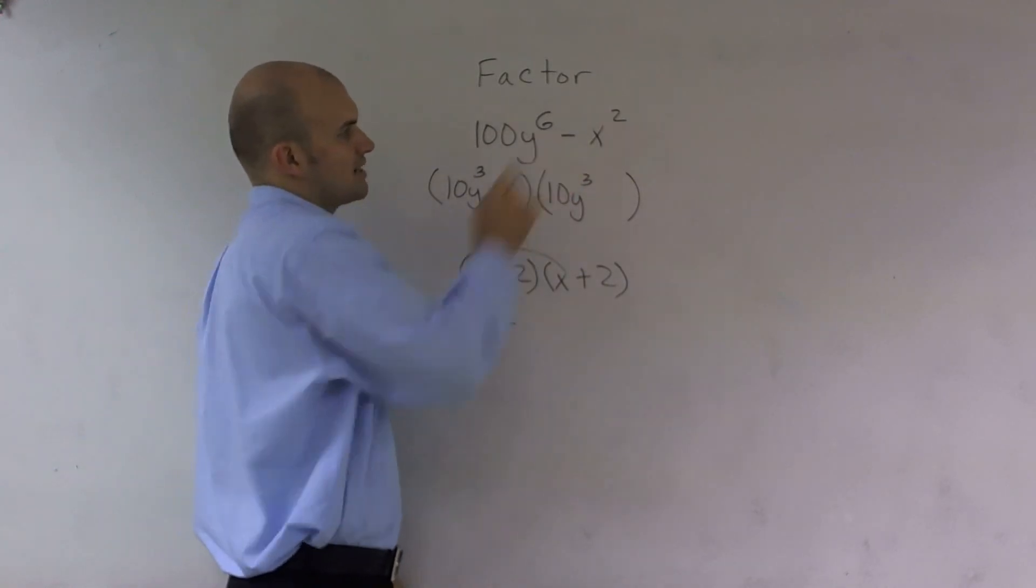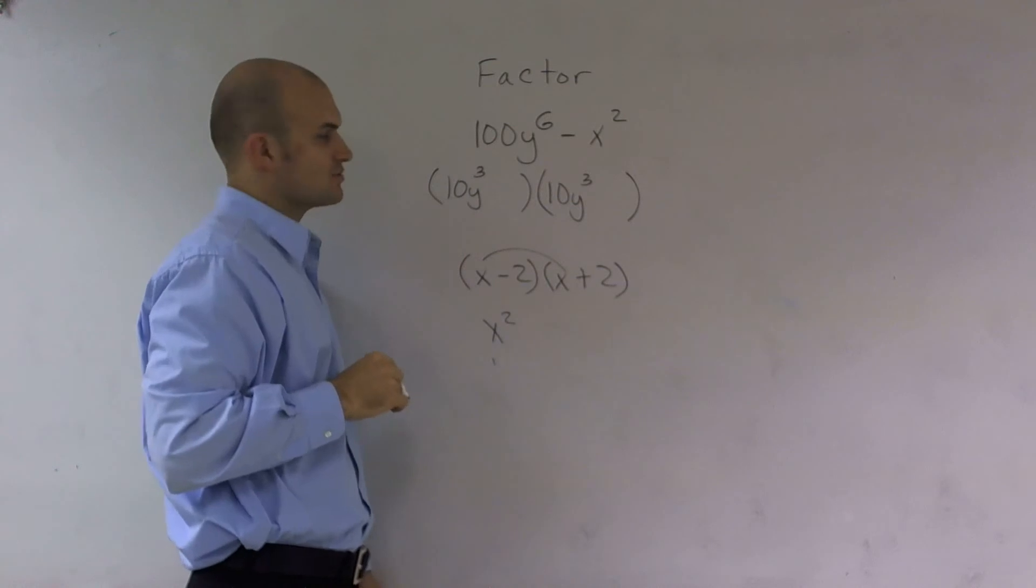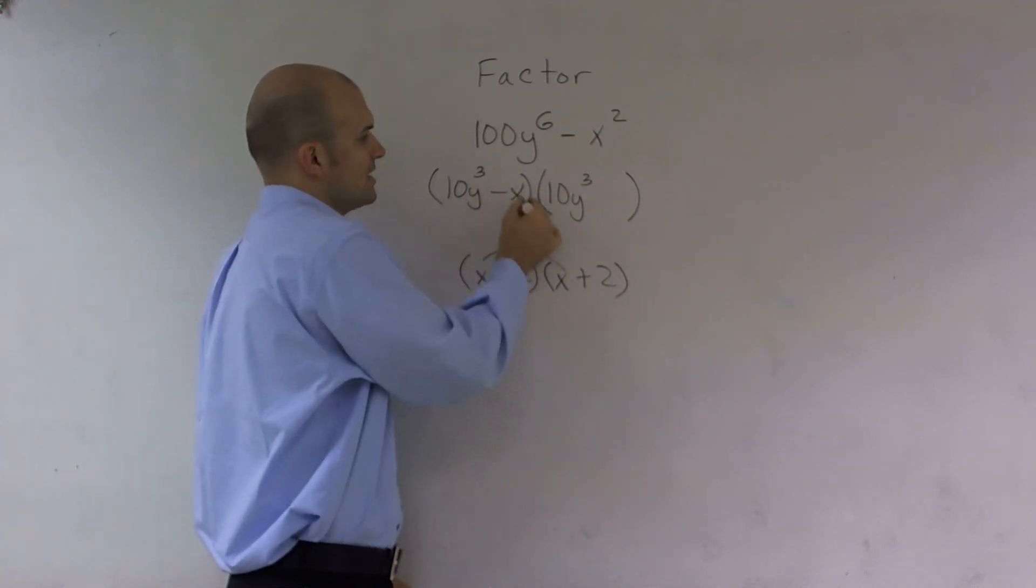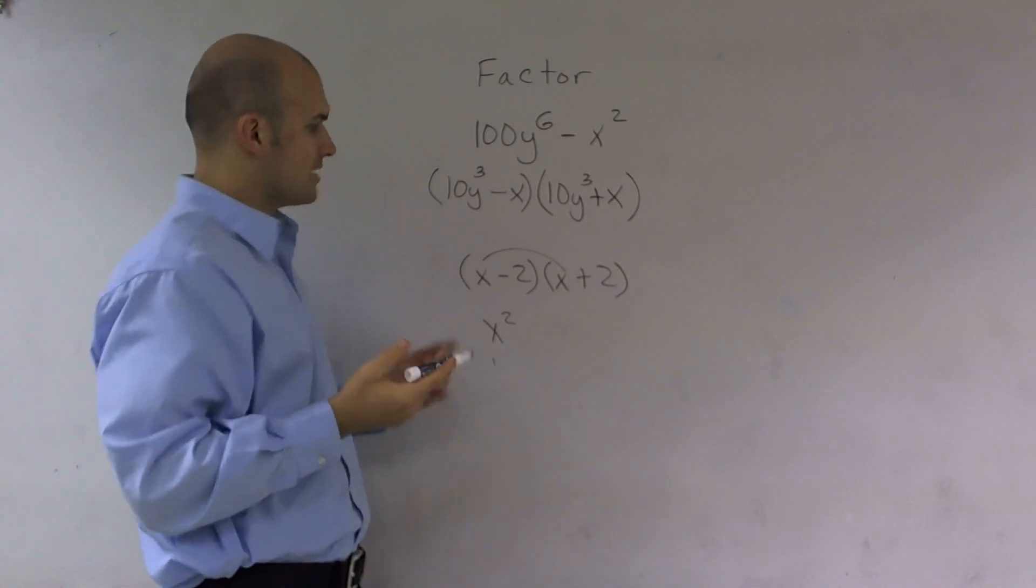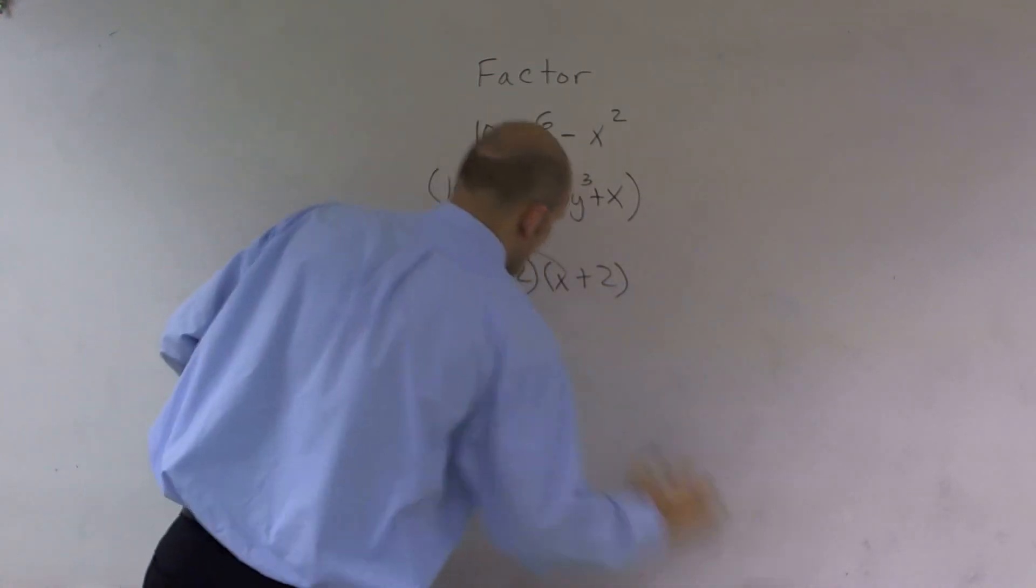Then I think about, is there two numbers I could pick that would give me a negative x squared? Well, yes, you could pick a negative x and a positive x. So the reason why this works, ladies and gentlemen,